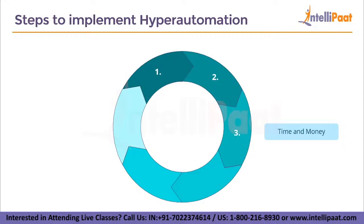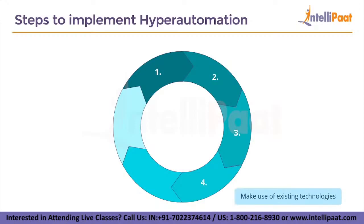The third step is time and money. Organizations need to benefit from implementing hyperautomation technology. This can be measured using metrics like time and money, which boils down to the efficiency and return on investment that are increased by implementing hyperautomation.